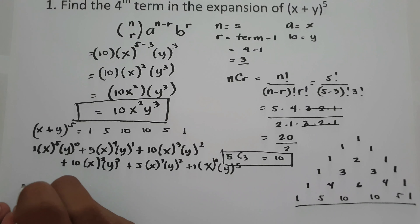Simplifying: y raised to 0 is 1, giving us x raised to 5 plus 5x raised to 4 y plus 10x cubed y squared plus 10x squared y cubed plus 5xy raised to 4 plus y raised to 5. Since we are looking for the fourth term — first, second, third, fourth — so the fourth term is 10x squared y cubed. As you can see, we came up with the same answer.